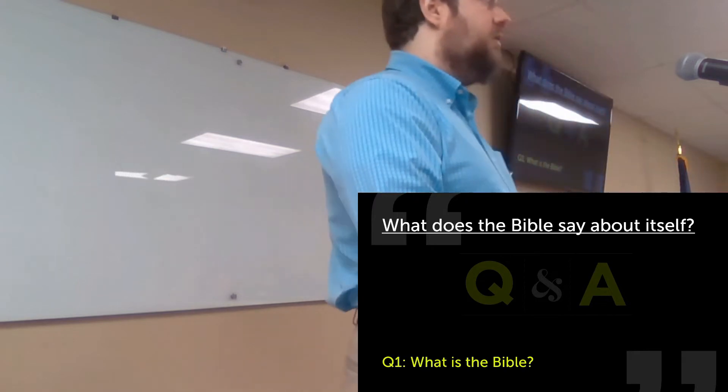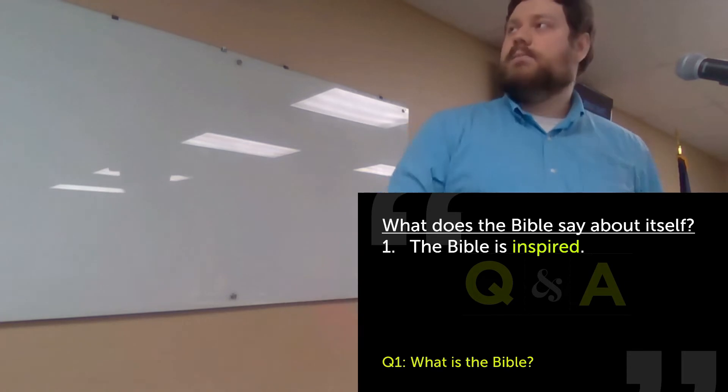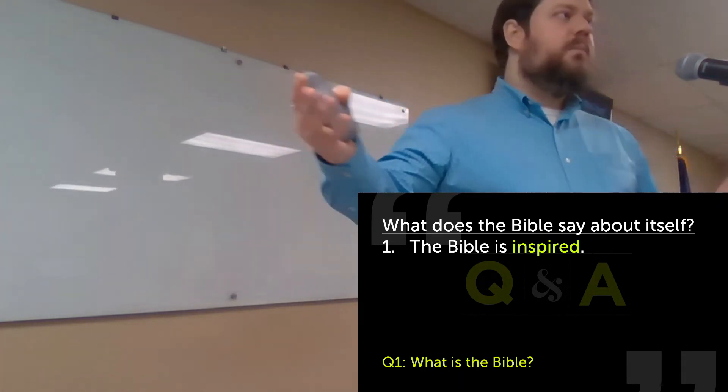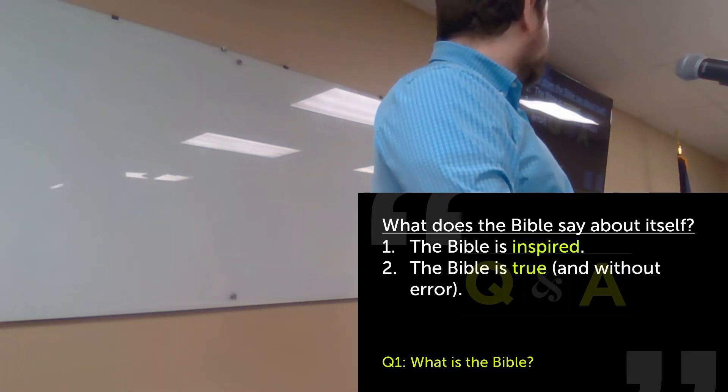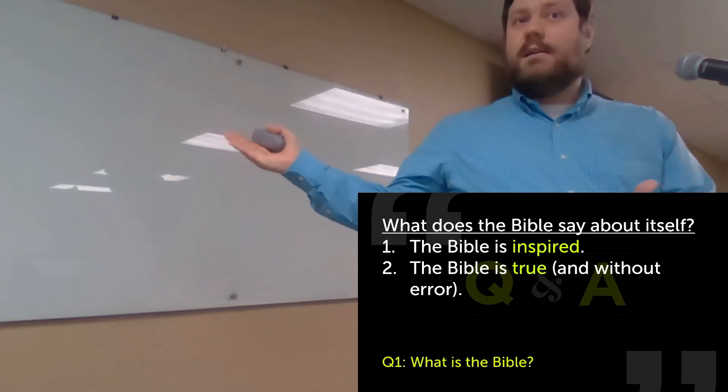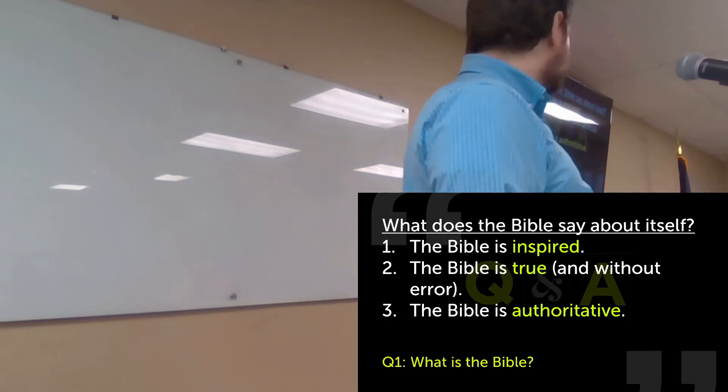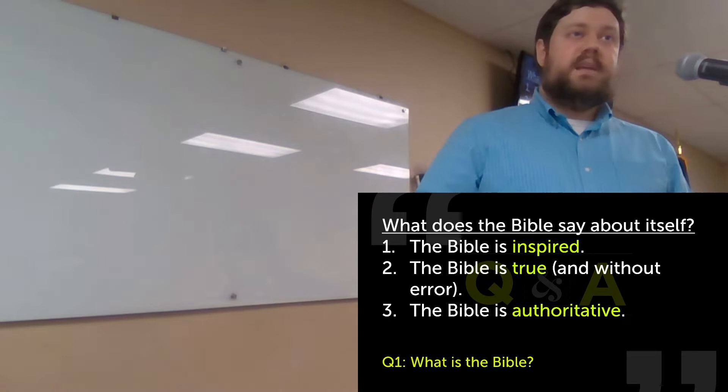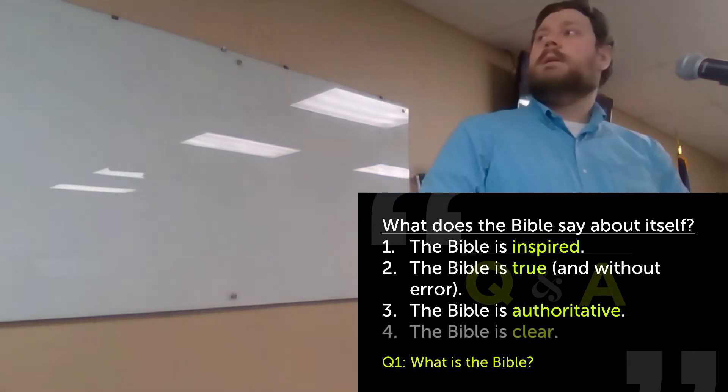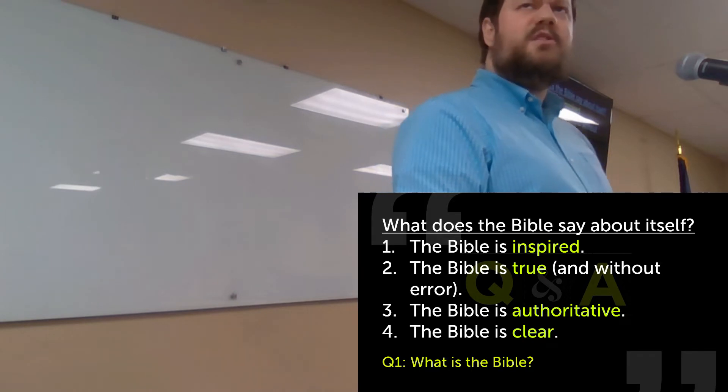I want to just take a second to look at some doctrine of scripture stuff. What does the Bible say about itself? This is an important foundation for everything we're going to talk about and why we're even here studying the Bible. First, the Bible is inspired. That means it's breathed out by God. God is the source of scripture, not humankind, not just what men dreamed up with their own opinions. The Bible is also true, and that means without error. Sometimes we use the word inerrant to describe this. If the Bible is from God and God cannot lie, then the Bible is going to be true in everything that it says.